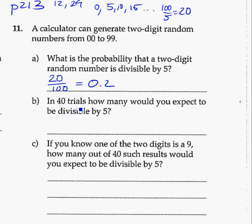In 40 trials, so they're going to generate 40 random numbers. How many of those numbers would you expect to be divisible by 5? So this is an expected value problem. We need to take the probability and times it by the number of trials. So in this case, we're going to have 0.2, the probability of getting a number divisible by 5, times it by 40. And we get 8. So we would expect to have 8 of those 40 numbers divisible by 5.